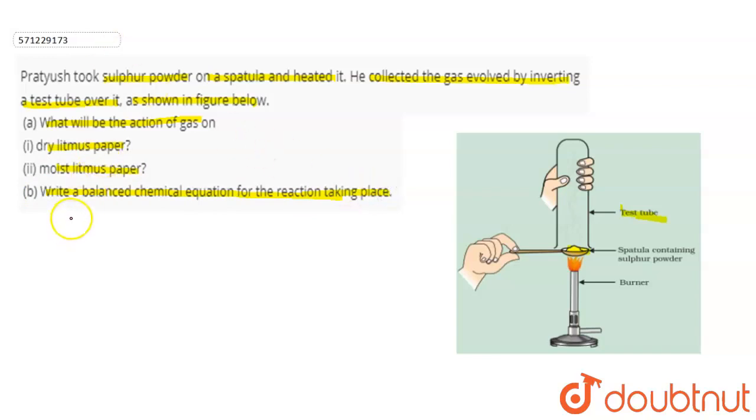So let's start. When sulfur powder is burned on spatula it forms sulfur dioxide and it may also form sulfur trioxide because sulfur reacts with atmospheric oxides and oxygen present in the environment.